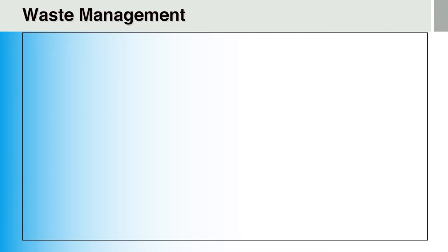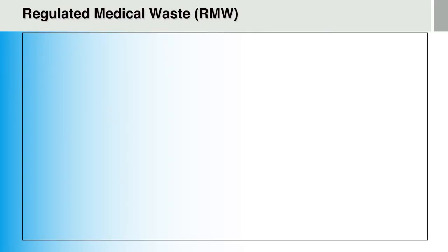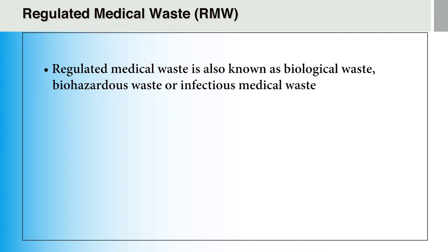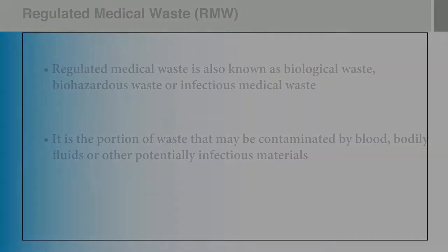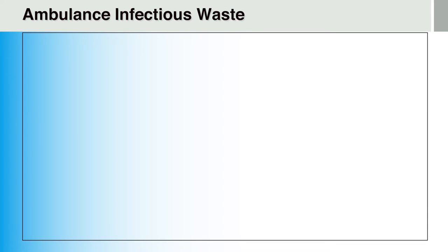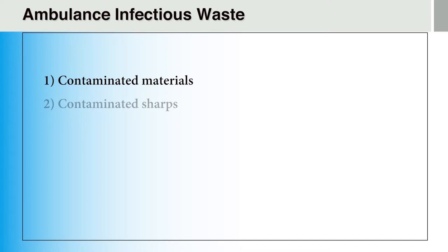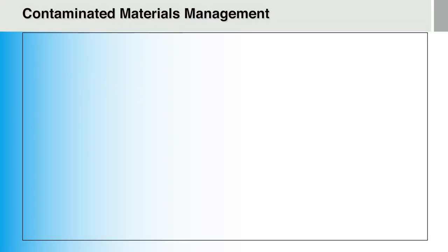In this section on Waste Management, we will discuss best practices in handling medical waste during and after patient transfer. Safe and effective waste management is essential in preventing the spread of infectious diseases and contamination of the environment. Also known as biological waste, biohazardous waste, or infectious medical waste, regulated medical waste is the portion of waste that may be contaminated by blood, bodily fluids, or other potentially infectious materials and therefore poses a significant risk of spreading infections. The three most common classes of infectious waste in EMS are contaminated materials, sharps, and linens. Contaminated materials include disposable PPE such as gloves, gowns, and masks, all single-use tools, equipment that came in contact with a patient, and all materials contaminated with blood or bodily fluids.